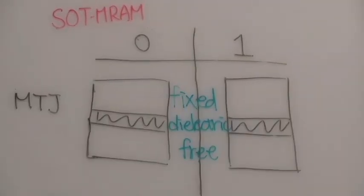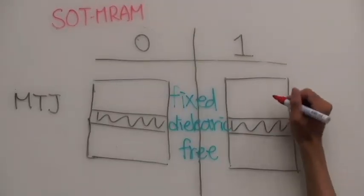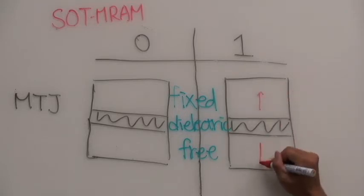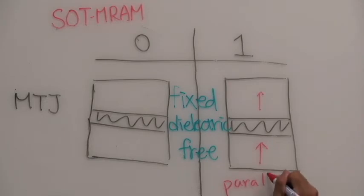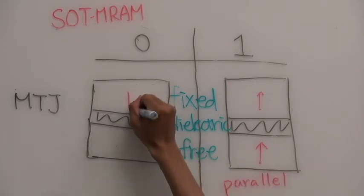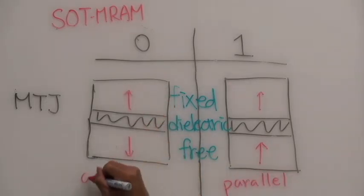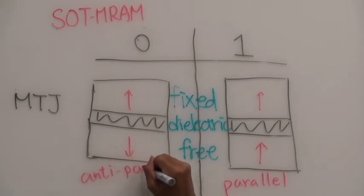So, the MTJ device has a low resistance when the magnetic moment of the free layer is parallel to the fixed layer, and a high resistance when the free layer moment is oriented anti-parallel to the fixed layer moment.